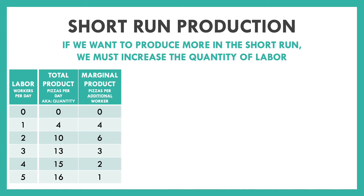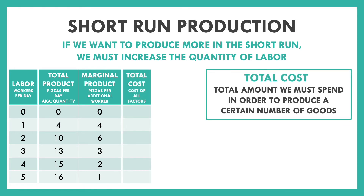Now let's move on to the next two columns, which deal with our costs. Costs are the total amount of money we have to spend in order to produce a certain number of goods. Some of our costs are fixed and some are variable. Fixed costs are costs we have to pay no matter what — like if you rented a kitchen space to make your pizzas, it doesn't matter if you're making one pizza or a thousand, you still pay the same amount.